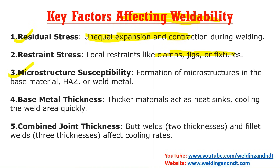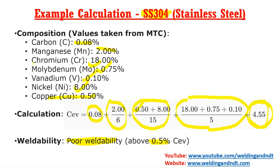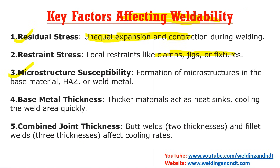Higher carbon equivalent makes the microstructure susceptible to cracking by brittle fracture. During welding, the material is heated to the molten stage, causing microstructural reformation, which also affects weldability. Base metal thickness is another big criterion — higher thickness means a faster cooling rate. Finally, unequal joint thicknesses also affect weldability.